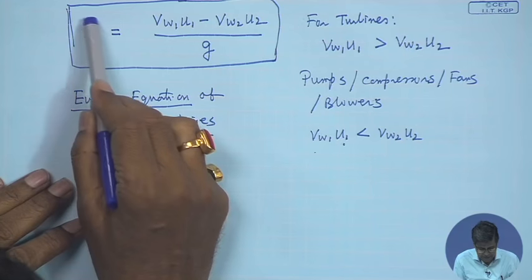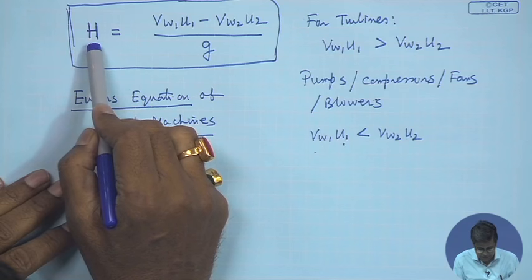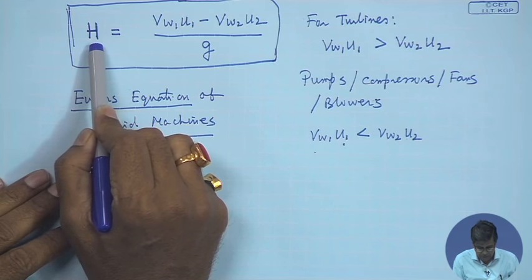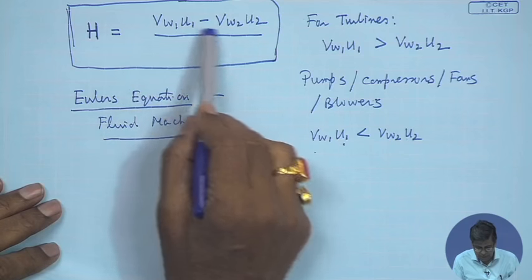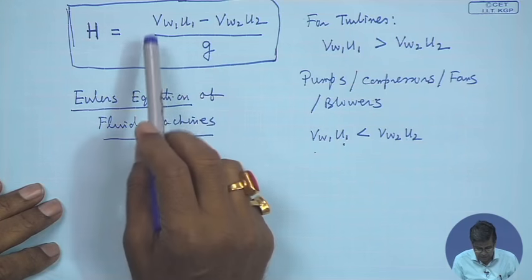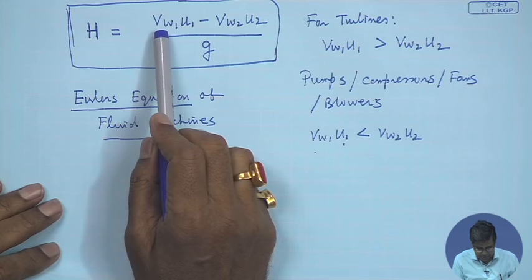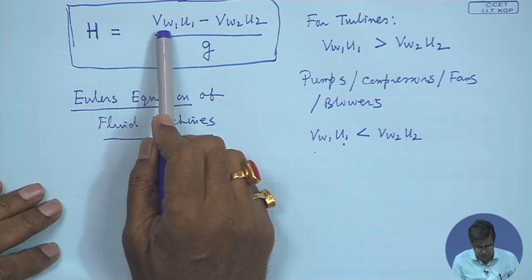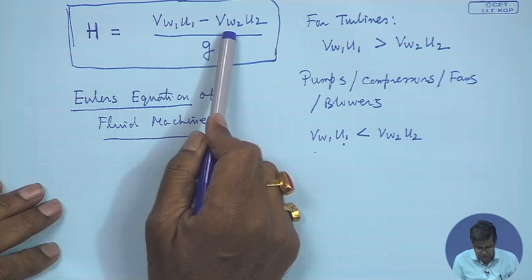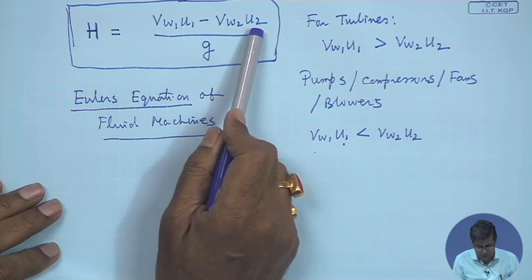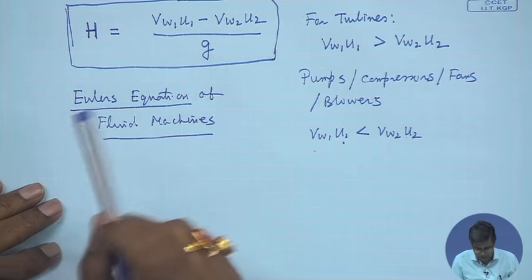Good morning and welcome to this session of fluid machines. In the last class we derived this expression: h represents the head, or energy per unit weight, being delivered by the fluid to the rotor. The nomenclature: V_w1 and V_w2 are the tangential components of fluid velocities at inlet and outlet of the rotor respectively, and u1, u2 are the linear velocities of the rotor at inlet and outlet.